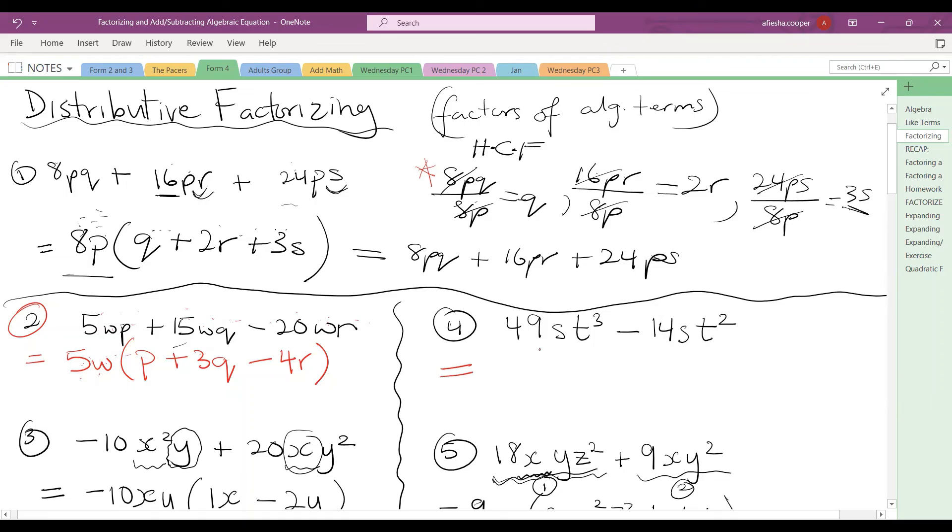So let's try this one here. We have 49st cubed minus 14st squared. So now we're seeing some powers, and we're like, what? So take our time with this step. What's the highest factor between 49 and 14? That is 7. And now we go with the s and the s. So both of them are s, so we can just take out the s. We know that, and they both have t's. So what we have to do is we're taking out the smallest of the two.